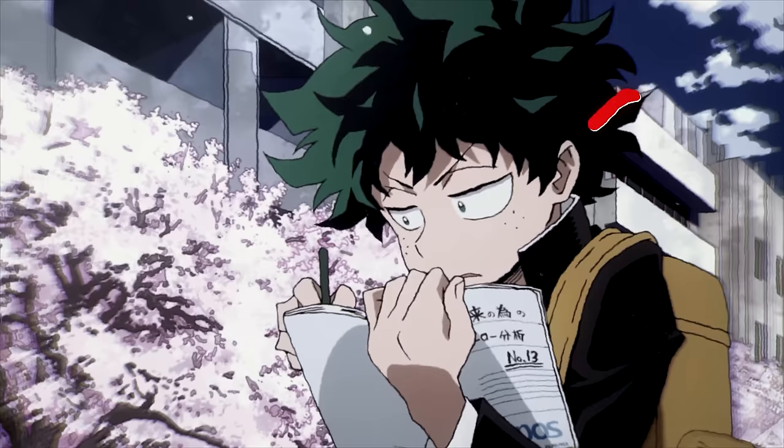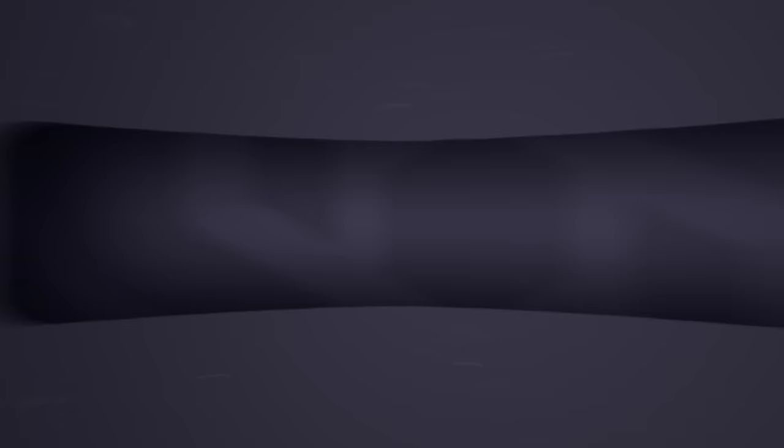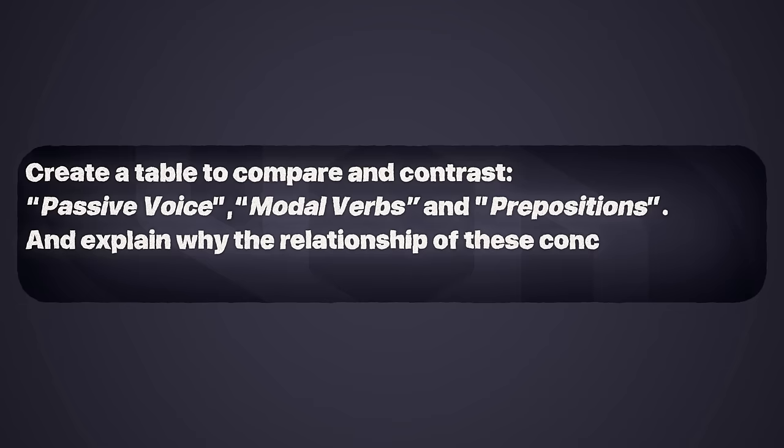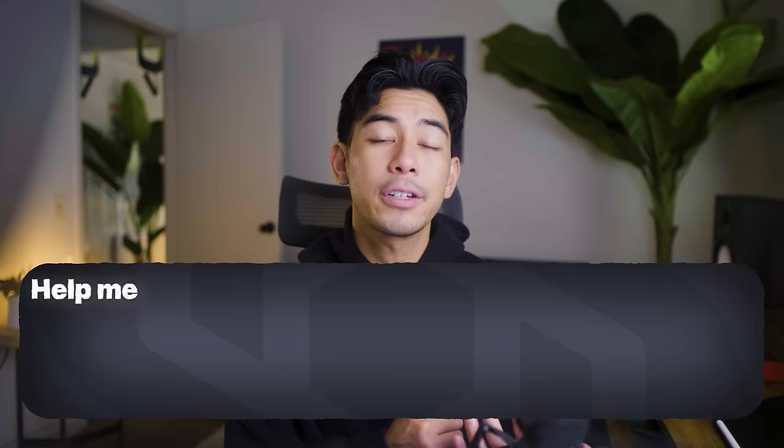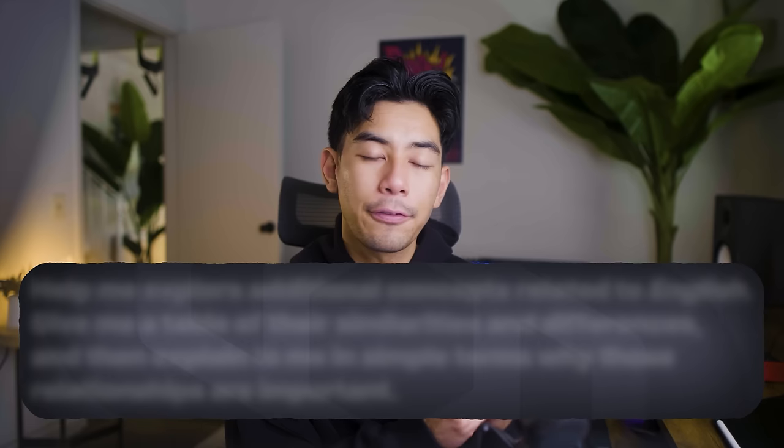This is where AI really shines — we don't need to search for those relationships anymore. It can compile a great starting point for us in seconds. Try out this prompt: 'Create a table to compare and contrast topics one, two, and three, then explain why the relationship of these concepts matters and how it helps me understand this concept as a whole.' This is a powerful prompt because it focuses on the relationship — both similarities and differences — and ties it back to the big picture. If you're completely stumped and don't know what to compare, try: 'Help me explore additional concepts related to this topic. Give me a table of their similarities and differences, and explain in simple terms why those relationships are important.'